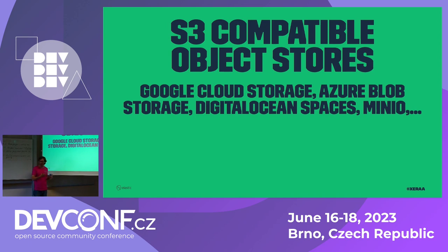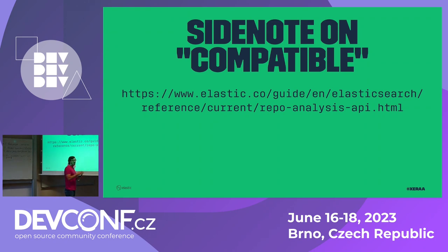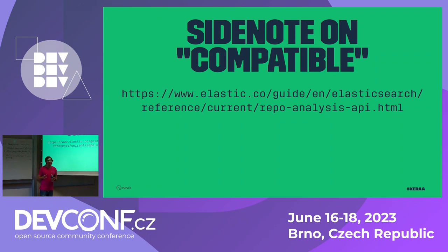One important side note: 'S3 compatible' is one of the bigger lies in our industry. In Elasticsearch we have built an S3 repo analysis tool that checks if your implementation is compatible enough for us to work, because we use that for backups. Depending on the vendor-specific implementation, everybody says 'we support some APIs,' but the finer details are very different.